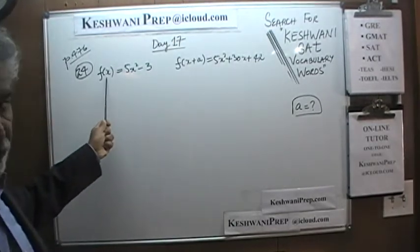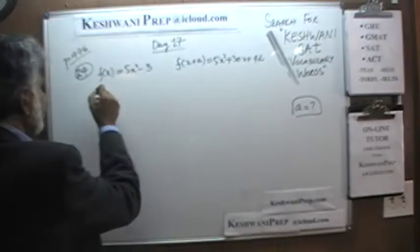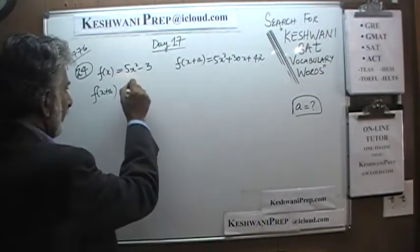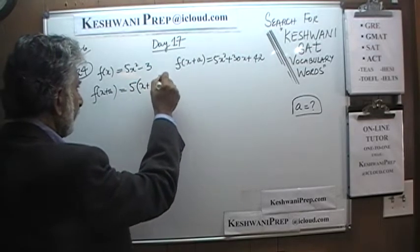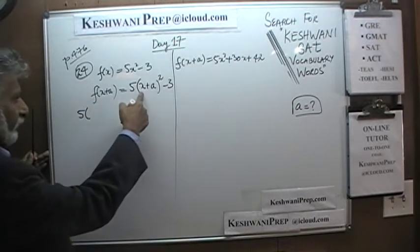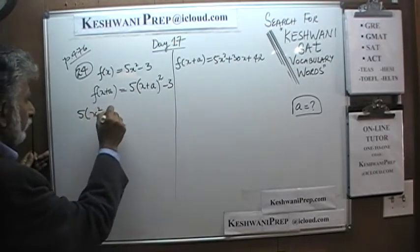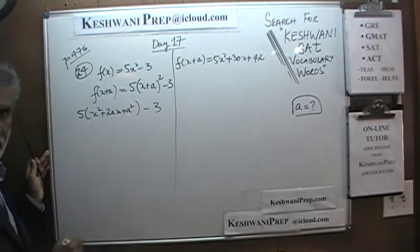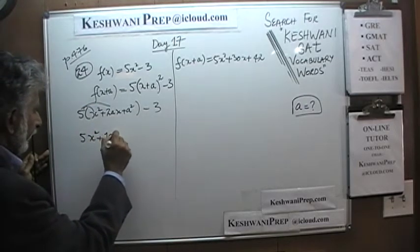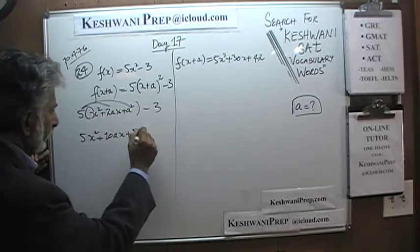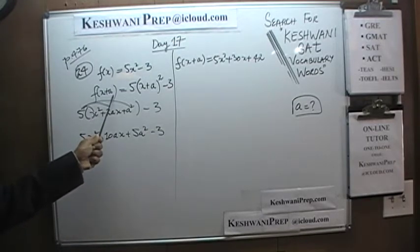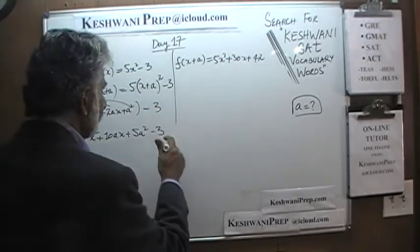We know that f of x equals 5x²-3, and we also know that f of x plus a is given. Since this is the function, if we substitute x plus a into it, f of x plus a equals 5 times (x plus a) whole squared minus 3. Expanding: that is 5 times (x squared plus 2ax plus a squared) minus 3, which gives us 5x squared plus 10ax plus 5a squared minus 3. That quantity is f of x plus a, which equals the given expression, so these two quantities must equal each other.